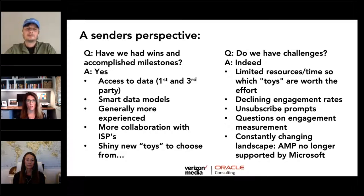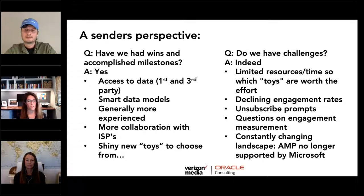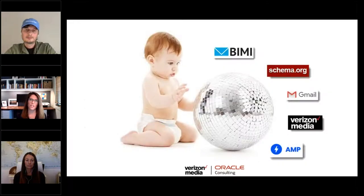There have been a lot of layoffs and furloughs, and very thin small teams trying to keep the lights on. We also have the issue of declining engagement rates, even prior to COVID — a very steady decline across verticals. ISPs are rolling out unsubscribe prompts, and there are a lot of questions around email engagement. AMP for email is no longer supported by Microsoft — how much should we invest in it?